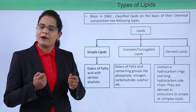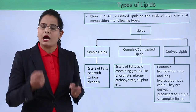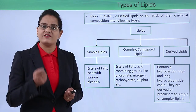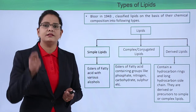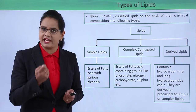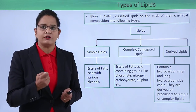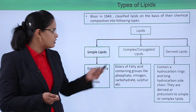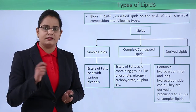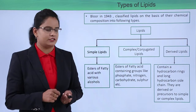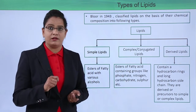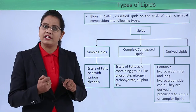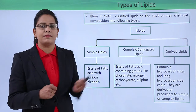Complex or conjugated lipids are more complex because apart from the ester linkages, the alcohol, and the fatty acid, they also have certain additional compounds or elements — like a phosphate group, a nitrogen, a phosphorus, or a sulfur group. That is the reason they are called complex or conjugated lipids.